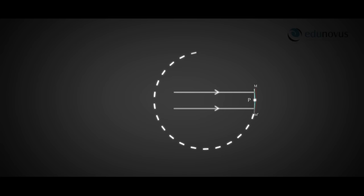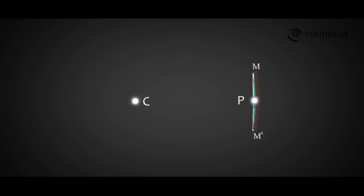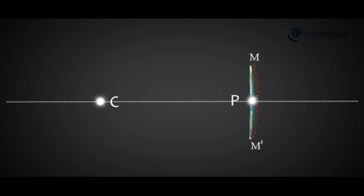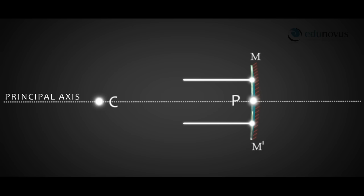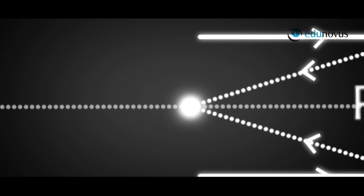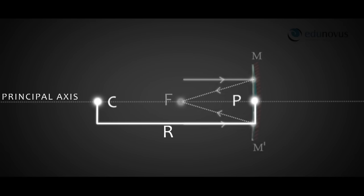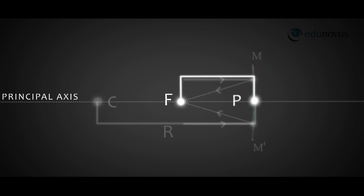The concave mirror is a part of a spherical shell. The center of the spherical shell is called the center of curvature, denoted by C. When you join C and the pole P, the straight line is called the principal axis. If incident rays on the mirror are parallel to the principal axis, then after reflection they meet at a point on the principal axis called the principal focus, denoted by F. The distance PC is called the radius of curvature R. The distance PF is called the focal length, denoted by f.